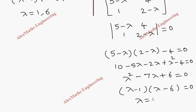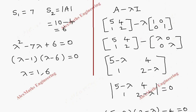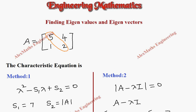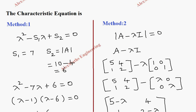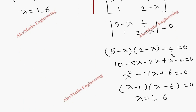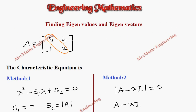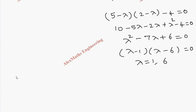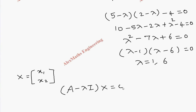After factorizing we get lambda minus 1 times lambda minus 6 equals zero, giving two values for lambda: 1 and 6. Using both methods we got the same eigenvalues. Method 1 is shorter, but both methods yield the same result. Now coming to the second part, we have to find the eigenvectors. We got eigenvalues 1 and 6. Let's take the eigenvector x as [x1, x2] and use (A minus lambda I) times x equals zero.